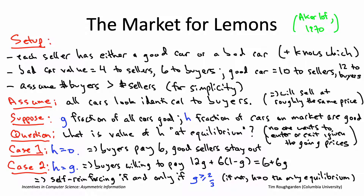When G is at least two-thirds, there are two very different equilibria, each self-reinforcing. If all buyers believe only bad cars are on the market and make low offers, no good-car seller will participate. But if all buyers believe all good cars are on the market and make higher offers, then sure enough all good cars will be on the market. In either case, buyers' beliefs are a self-fulfilling prophecy. This is the kind of phenomenon usually referred to when you hear the term 'consumer confidence' in the news.